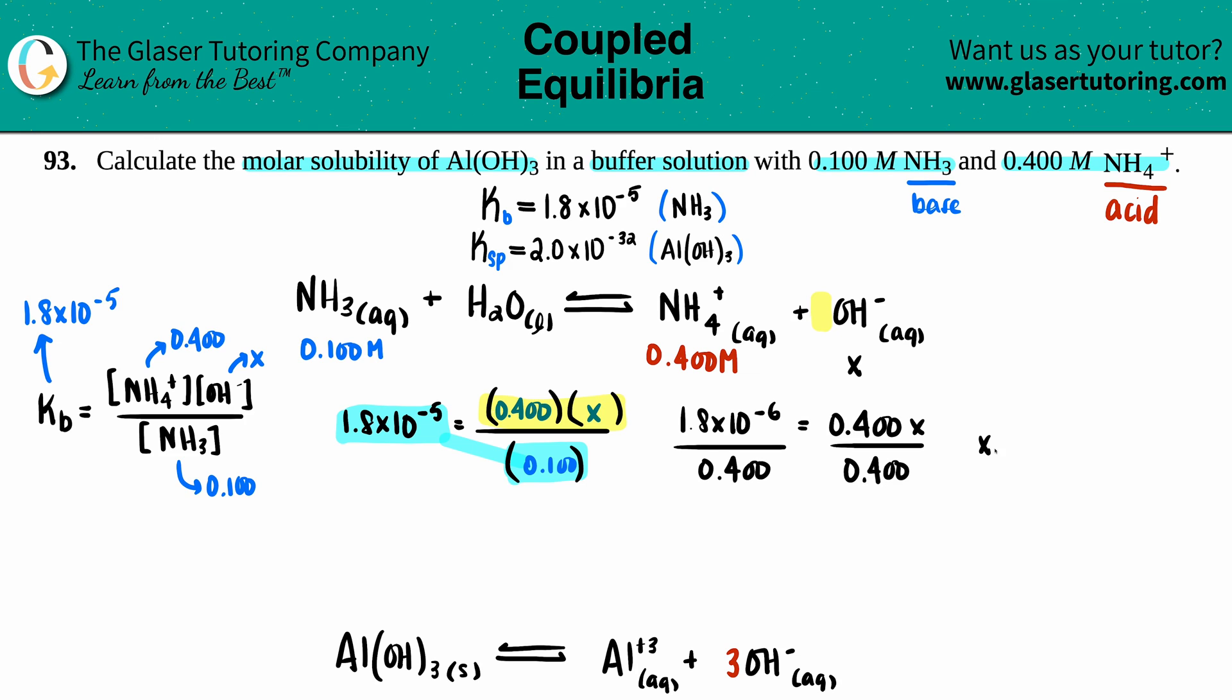Now we're just going to find out x. So 1.8 × 10⁻⁶ divided by 0.4, and I get 4.5 × 10⁻⁶, and that's a molarity. Now if you want to, you could do the 5% rule just to see. We did assume here because we didn't have plus x or minus x with our numbers, but I mean this number is so small that our assumption is correct.